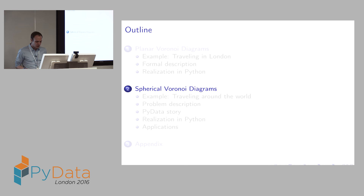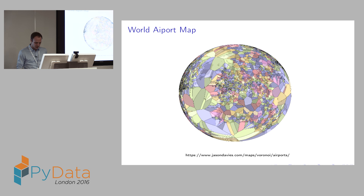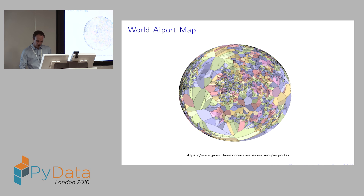The problem of computing spherical Voronoi diagrams is exactly analogous to computing planar Voronoi diagrams. Assume you want to travel around the world — the world is roughly a sphere. The input into the Voronoi diagram you see here is every airport on this planet, and you'd like to know what is the closest airport. This Voronoi diagram tells you exactly that.